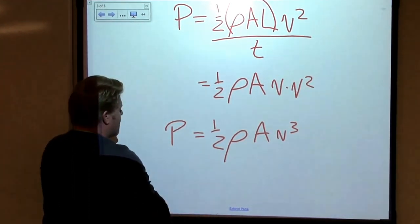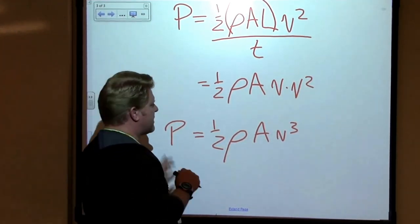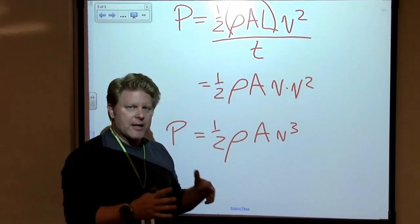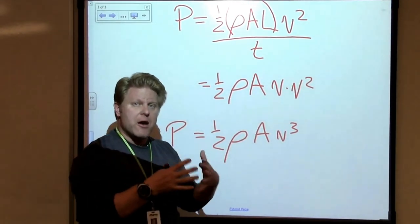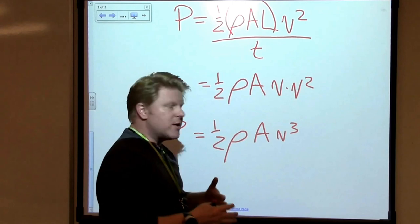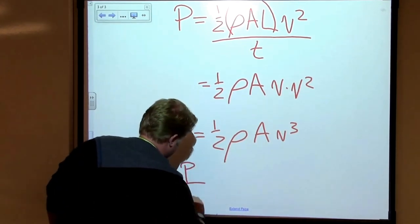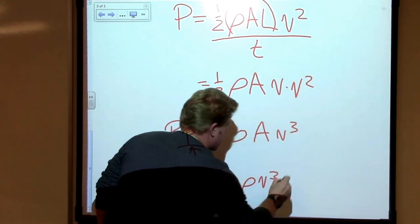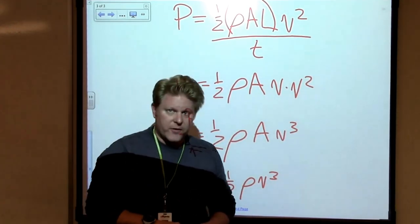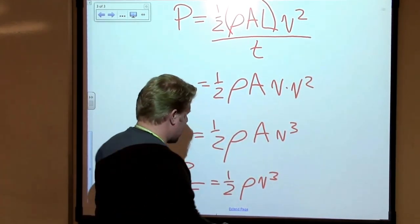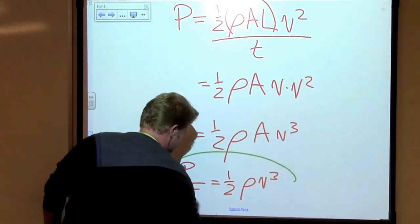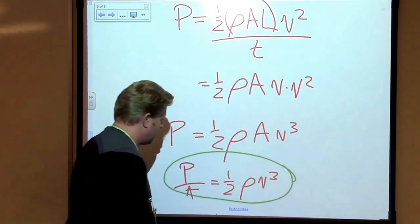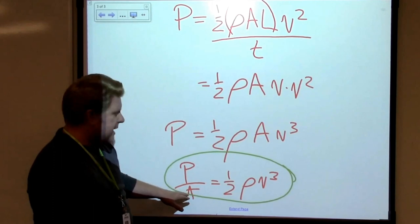I want to move this area over because this is the power that's available in that area. So if we're going to talk about power per unit area, let's make that ratio. Power divided by area is equal to one half times the density times the cube of the velocity. So the question we have to ask, for a given area, if we let the area stay the same.